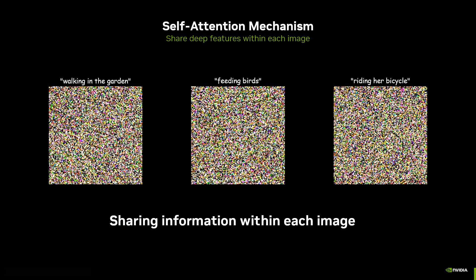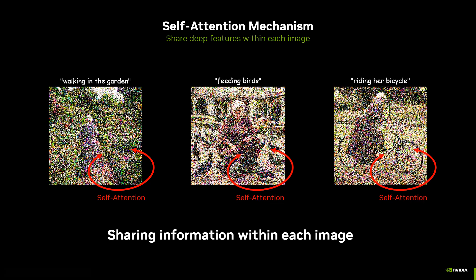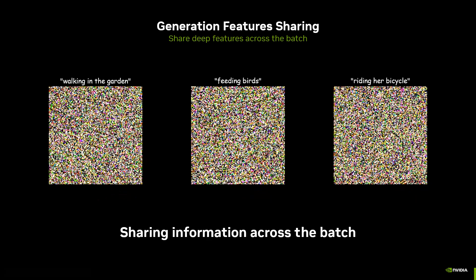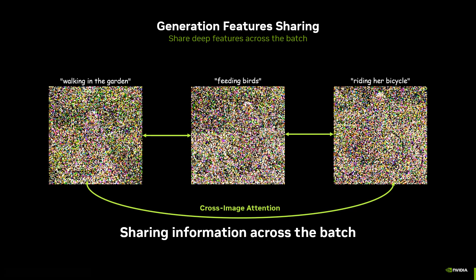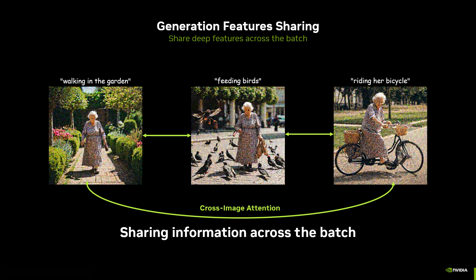Next, we modify the self-attention mechanism used in standard text-to-image models. The self-attention shares information between patches within the same image. We change that mechanism to share information between patches of different images across the batch. This results in a consistent subject in all the images.